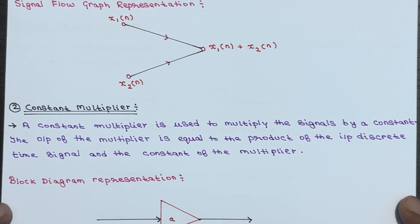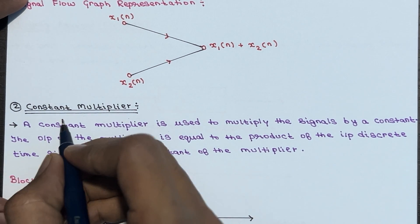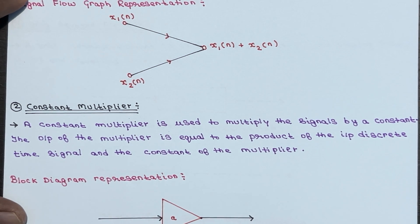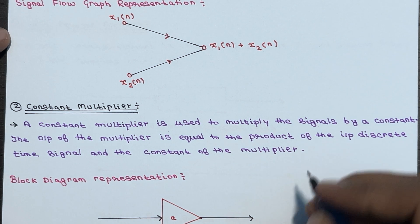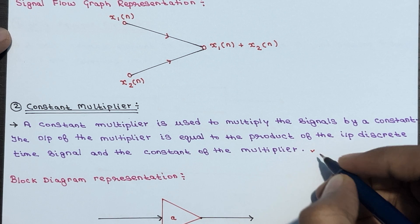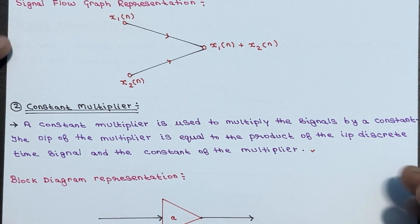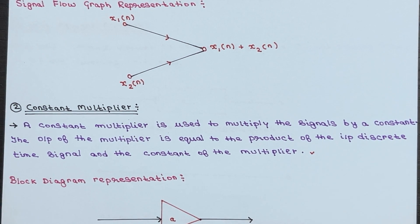Next up is the constant multiplier. As the name suggests, this element multiplies a signal by a constant value. The output of the multiplier is the product of the input discrete time signal and the constant.